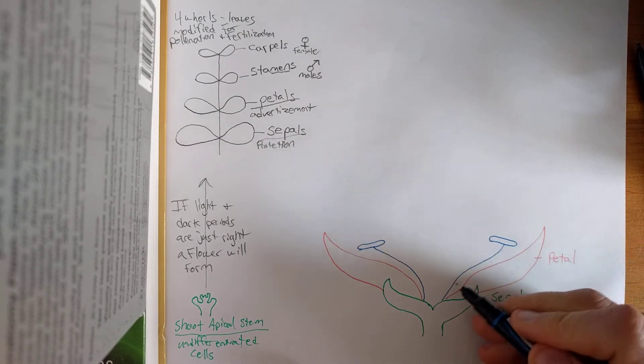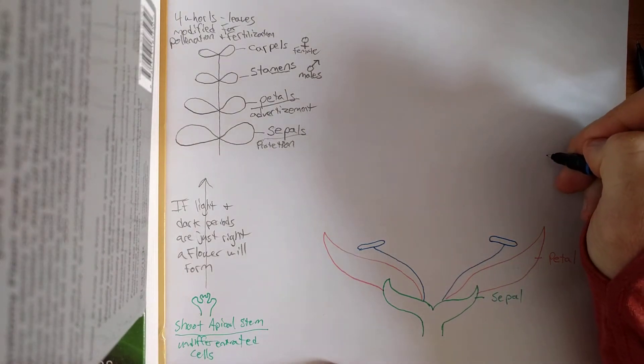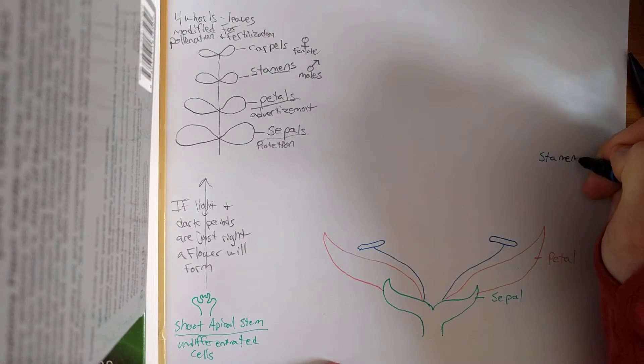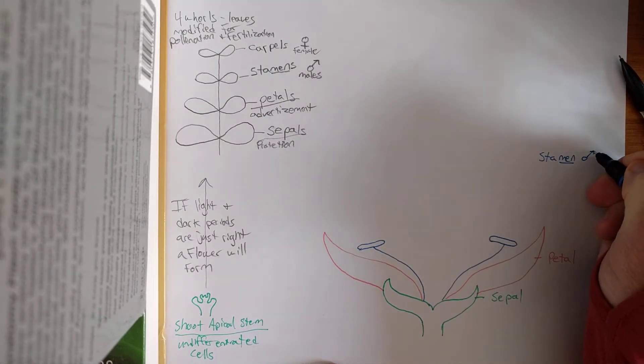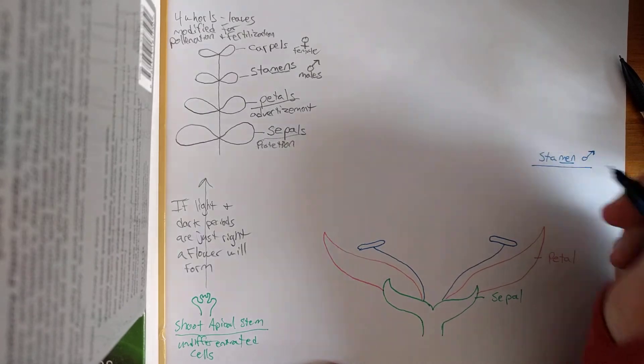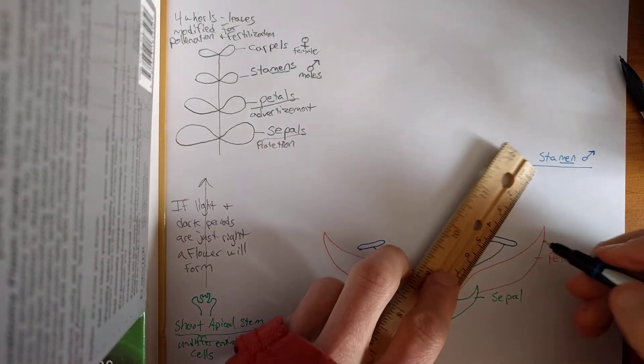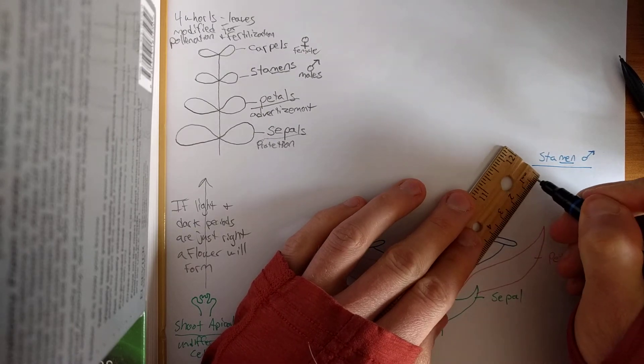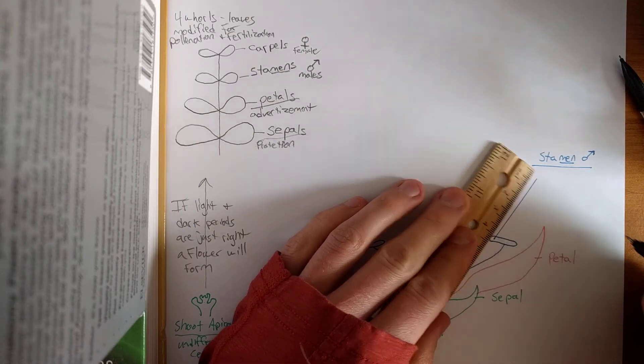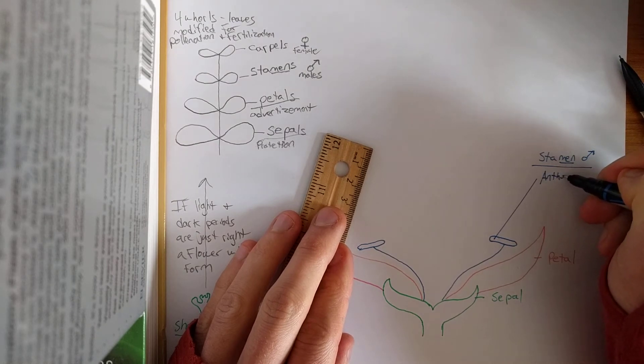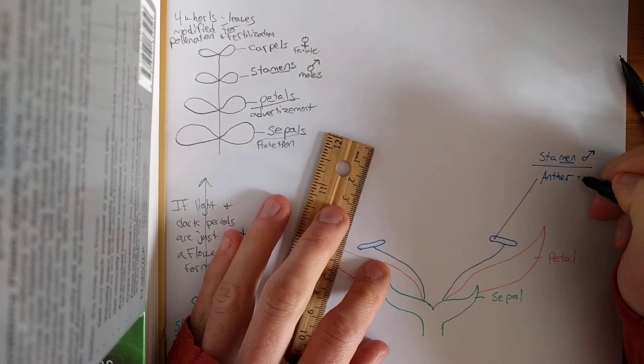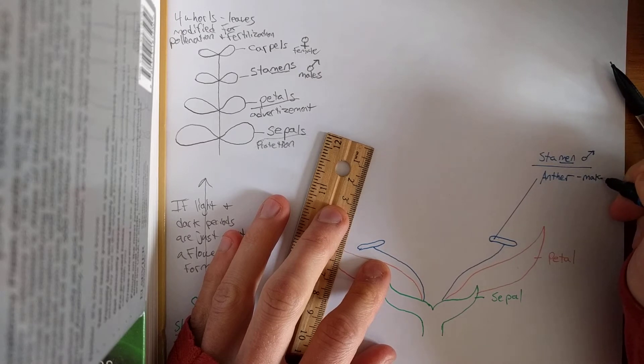Alright, so this blue structure is your stamen. Remember, men, male. Alright, what do we see within this? Well, you've got this structure on the top, which is called your anther. And this makes pollen.